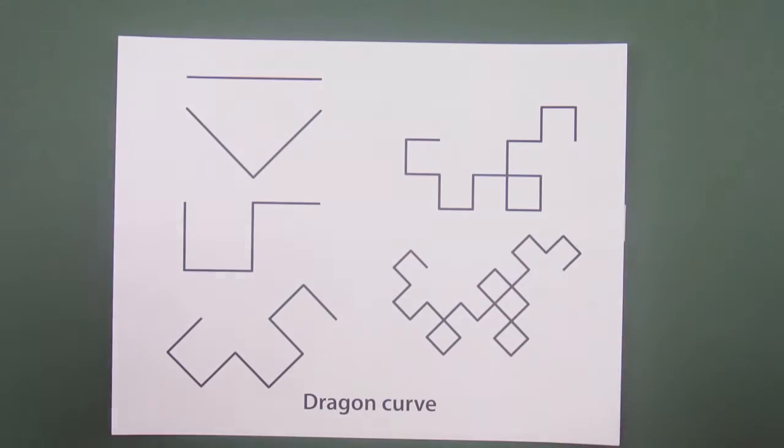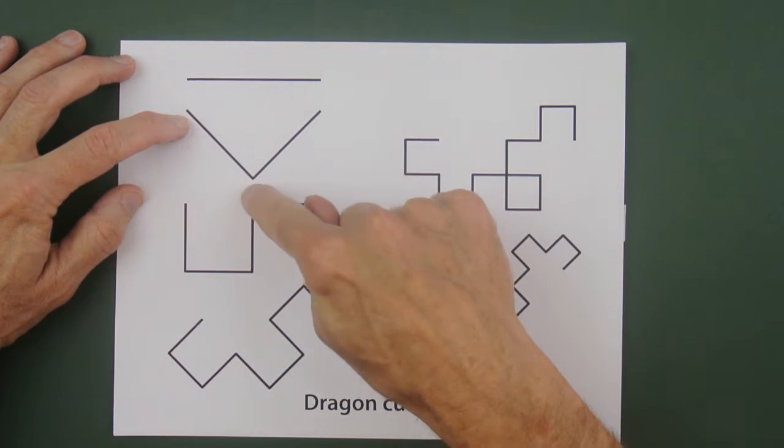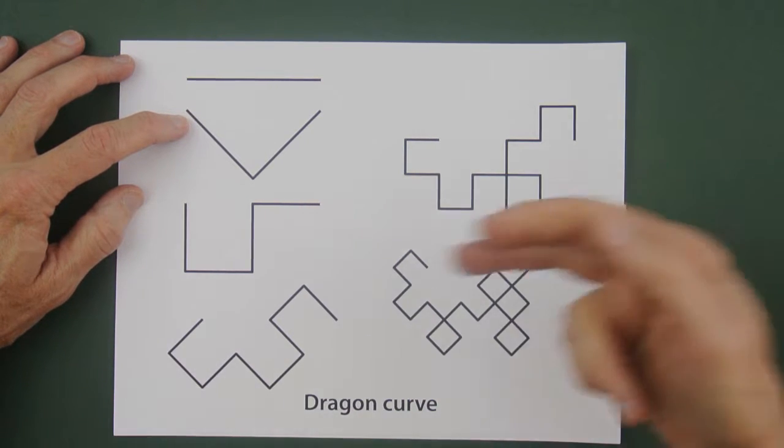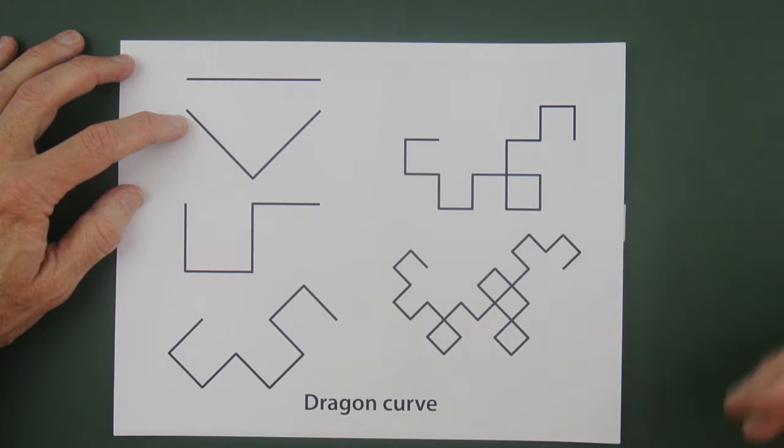First, reviewing how the dragon curve works. You start with a line segment, make two copies, arrange them at right angles, make two copies of that, arranged as shown. Then you iterate and as you progress, it starts to look kind of dragon-y.